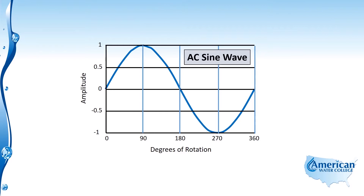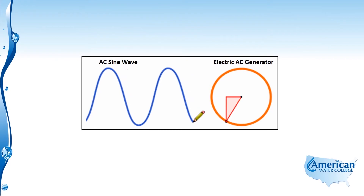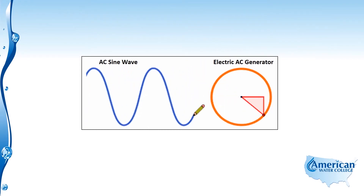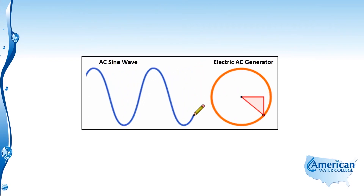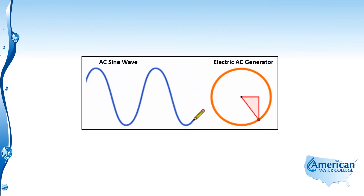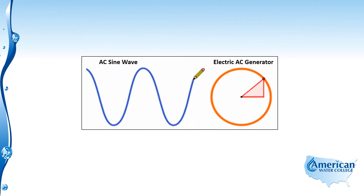This next slide shows graphically how, as the electrical AC generator rotates, what the sine wave looks like. Here you can see as the generator rotates round and round, the sine wave peaks up high, then goes down to a negative peak and passes through zero continually. This is the AC sine wave that results from a rotating AC generator.